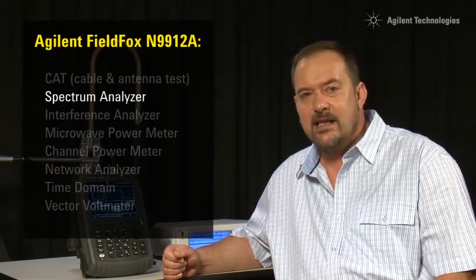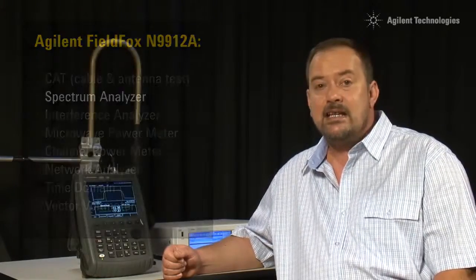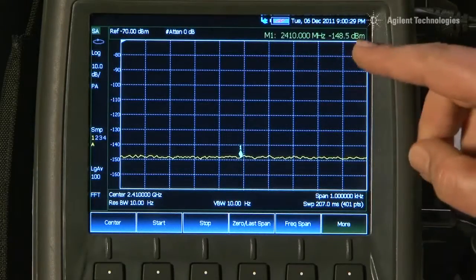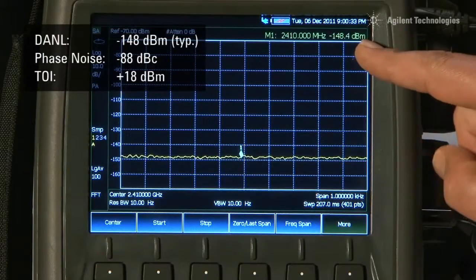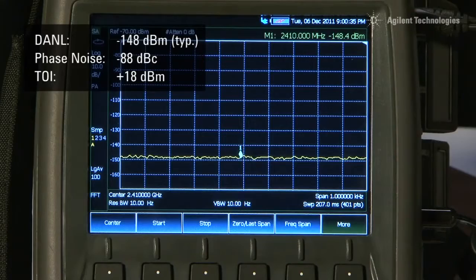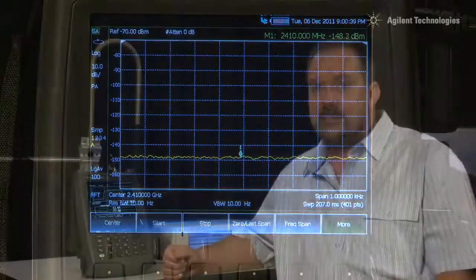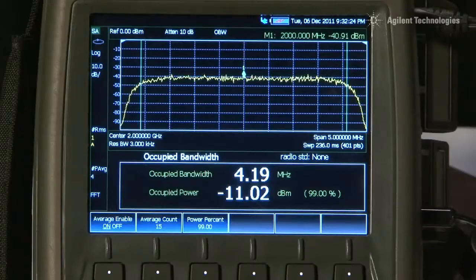The optional spectrum analyzer is quite outstanding. It can measure signals as low as minus 148 dBm, with a phase noise of only minus 88 dBc and a third order intercept better than plus 18 dBm.